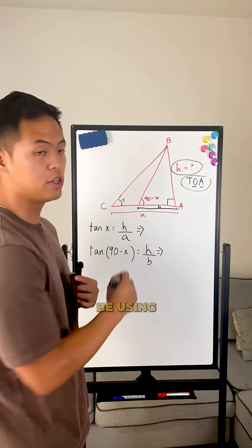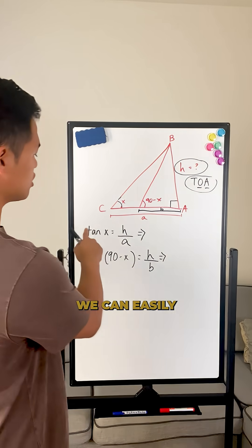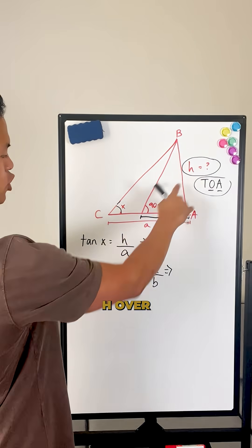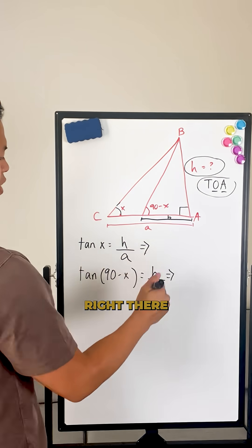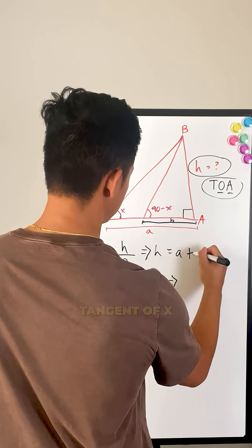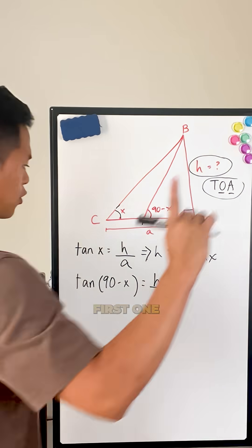Now, because we know we're going to be using tangent, we can easily solve for these two equations right here. Tangent of X equals H over the little A right there. So we know that H is going to equal A times tangent of X. That's the first one done.